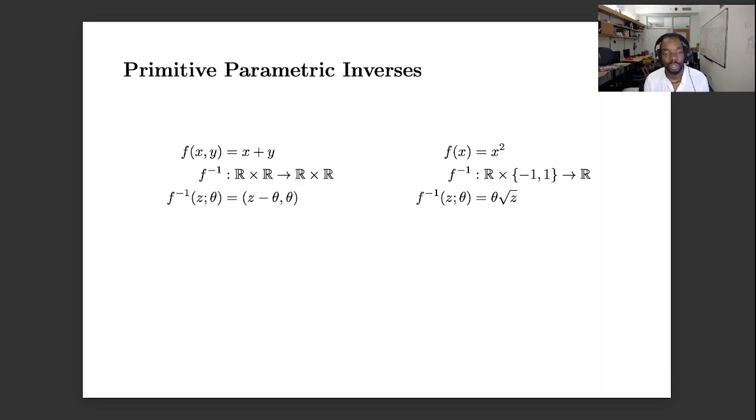So let me just show you an example. Addition, f of x and y equals x plus y. The inverse of the addition function takes some value z and some parameter theta and produces z minus theta for x and theta for y, the point being that z minus theta plus theta is equal to z. And the second point is that if we vary theta we get out different combinations of x and y which all sum to z.